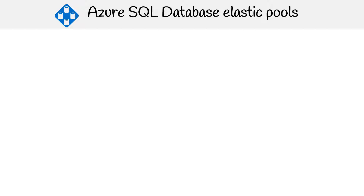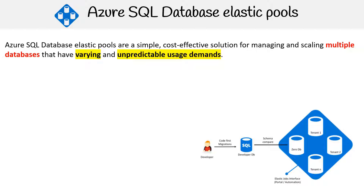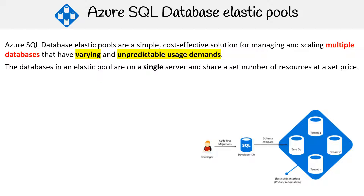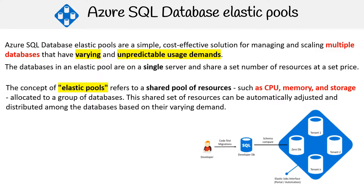The next topic we'll be covering are Azure SQL Database Elastic Pools. Azure SQL Database Elastic Pools are a simple, cost-effective solution for managing and scaling multiple databases that have varying and unpredictable usage demands. The databases in an elastic pool are on a single server and share a set number of resources at a set price. The concept of elastic pools refers to a shared pool of resources, such as CPU, memory, and storage allocated to a group of databases. This shared set of resources can be automatically adjusted and distributed among the databases based on their varying demand.